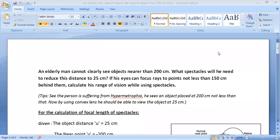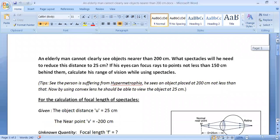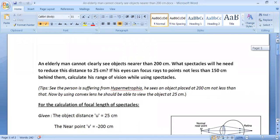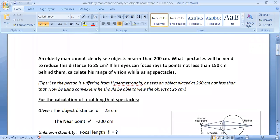So we have done the first portion of this question, let us do the second portion. If his eyes can focus rays to points not less than 150 centimeters behind them, calculate his range of vision while using spectacles.